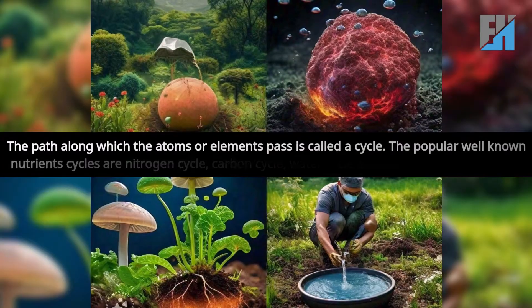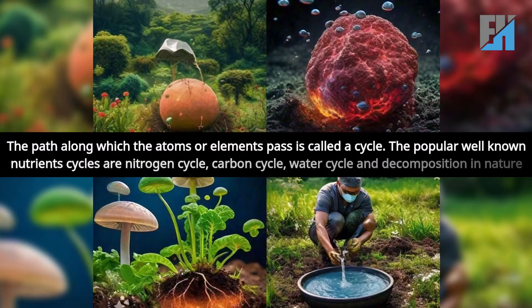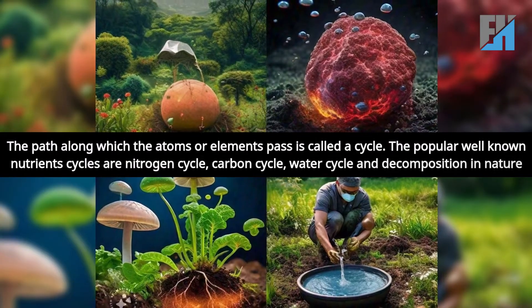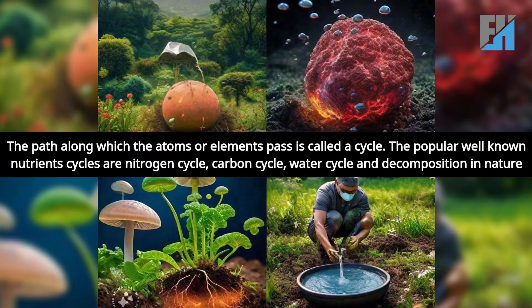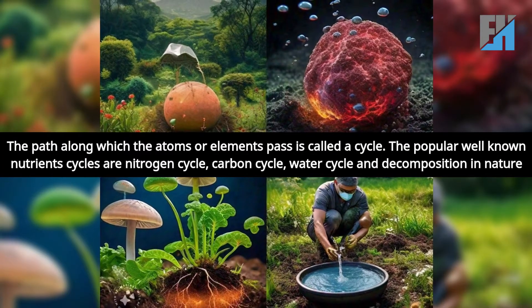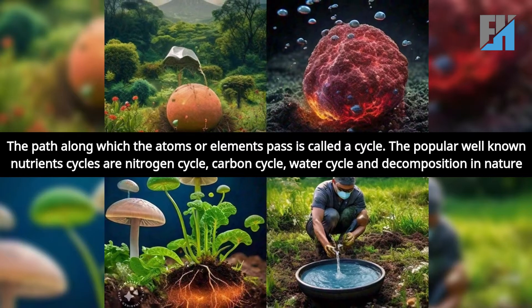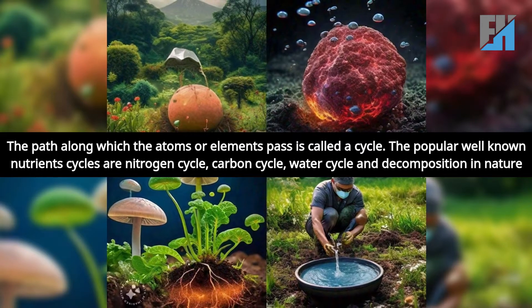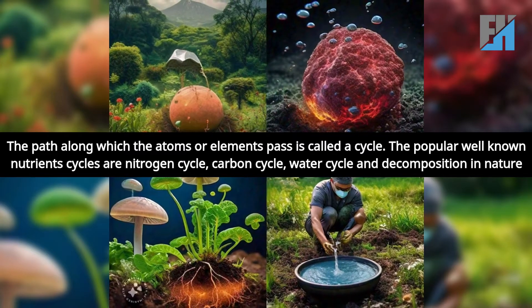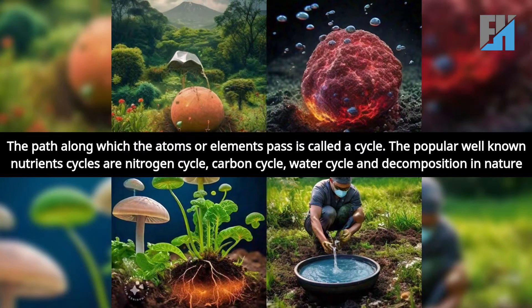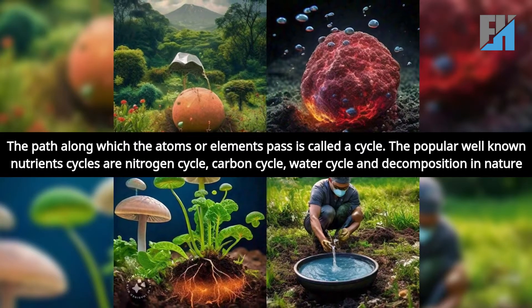The path along which the atoms or elements pass is called a cycle. The popular well-known nutrient cycles are the nitrogen cycle, carbon cycle, water cycle and decomposition in nature.